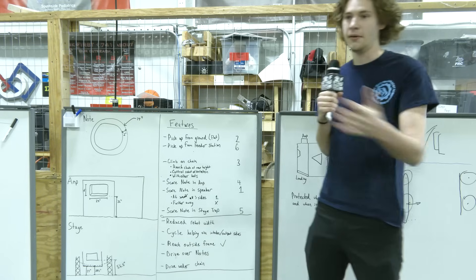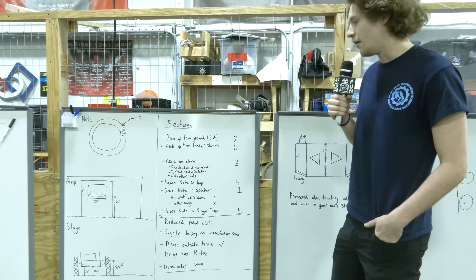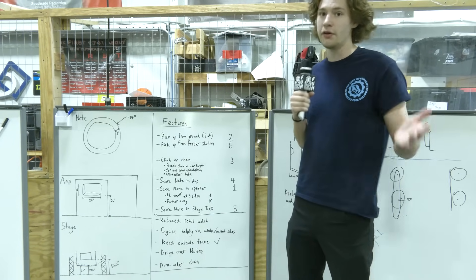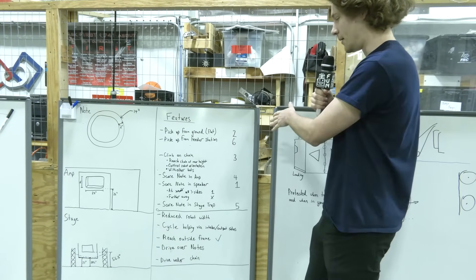And since it's a circle, obviously you can come from any point and it'll be the exact same. So picking up from the ground allows us, opens up the capability in terms of scoring, allows you to get from basically anywhere on the field, whether game pieces are dropped or whatnot. So that's a very big priority for us.